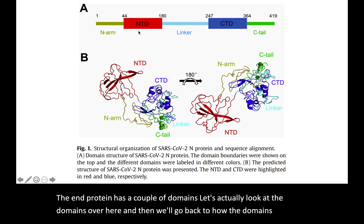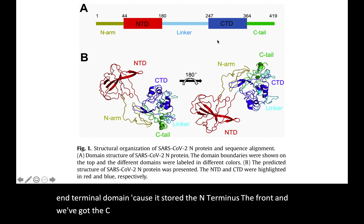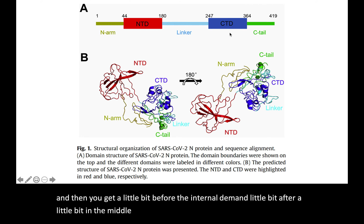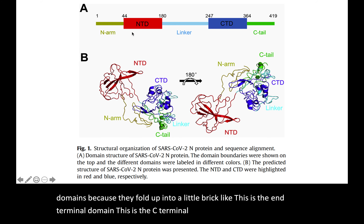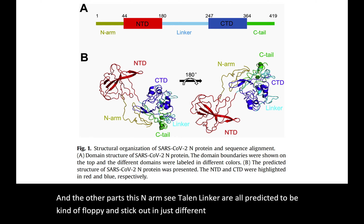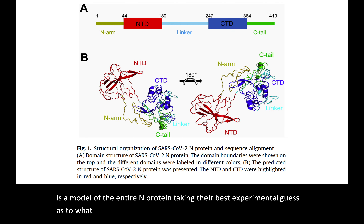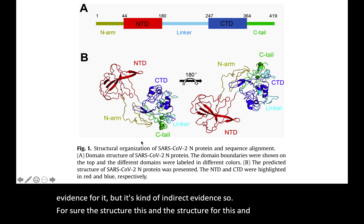It has what we call the N-terminal domain, because it's toward the N terminus — the front — and the C-terminal domain, which is toward the back. There's also a little bit before the N-terminal domain, a little bit after, and a little bit in the middle. The N-terminal and C-terminal domains fold up into little bricks. The other parts — the N arm, C tail, and linker — are predicted to be floppy and stick out in different ways. This picture is a model of the entire N protein; we know the structures of the two folded domains for sure, but we're a little hazy on the unfolded parts in the middle.